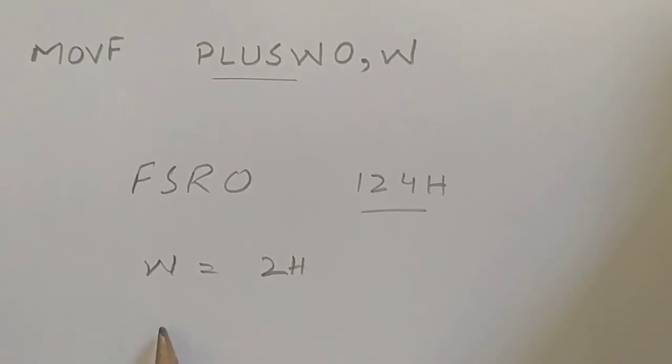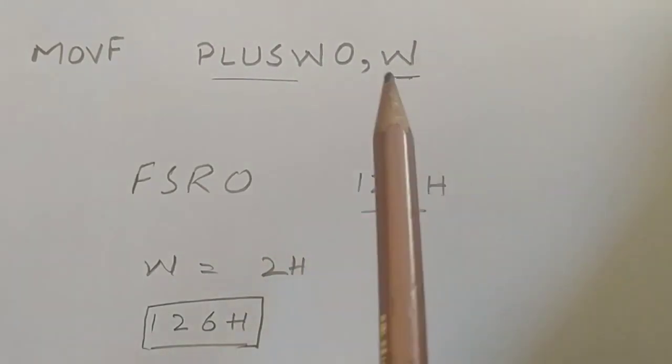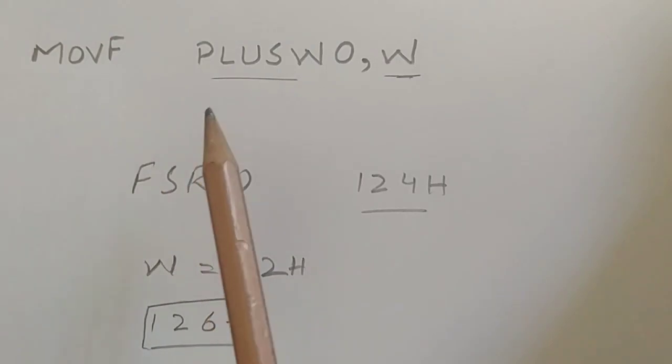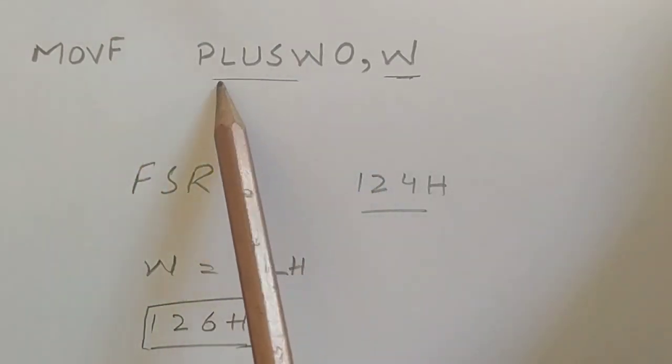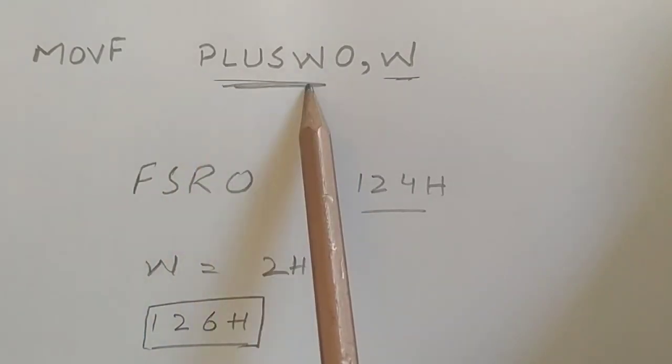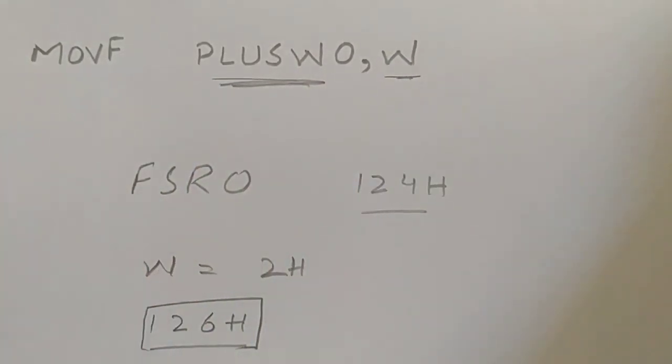And the final address we are having is 126 hex. So this is the address from where data will be copied, and that data will be placed in working register as we have used MOVF instruction. MOVF instruction will copy the contents of this address into working register.